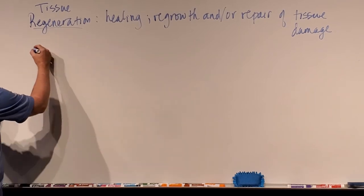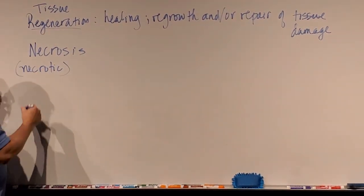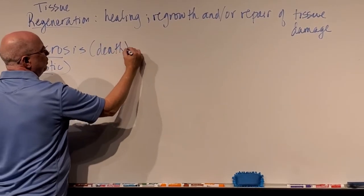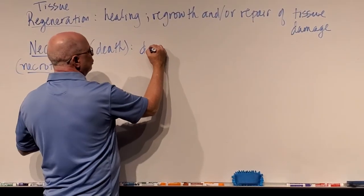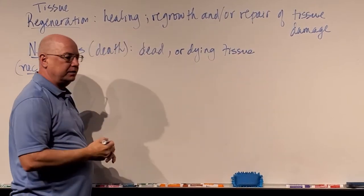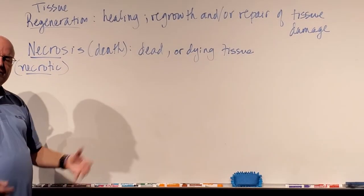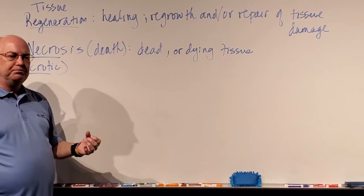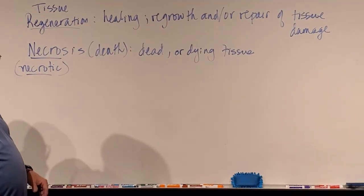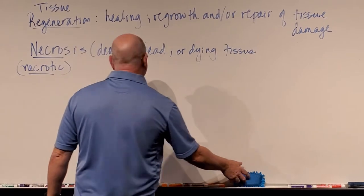Now the opposite of regeneration is necrosis. You'll sometimes hear the term necrotic tissue. Anytime you hear 'necro,' necro means death. So when we have tissue necrosis, it's the death of the tissue. Necrosis is just dead or dying tissue. You've cut off the blood supply to the tissue so the cells start dying, or there's an infection where the infection is eating up the tissue and you're seeing necrosis. And very often you have to go in and scrape away the dead tissue, and regeneration can occur if treated properly.